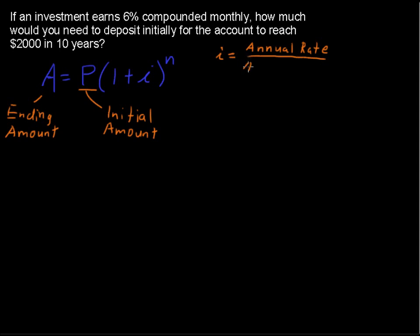So I'll just say number of compounds per year. And as long as we're right here, I will just write that out for our problem, and that's .06.